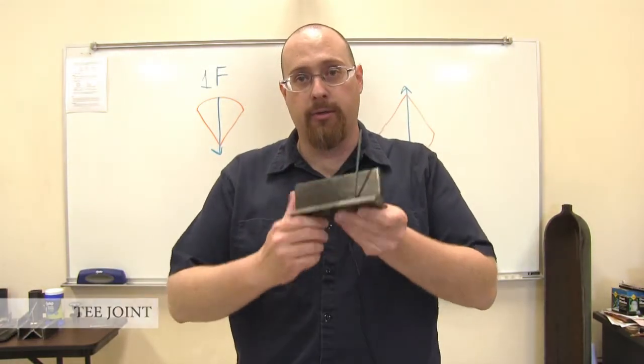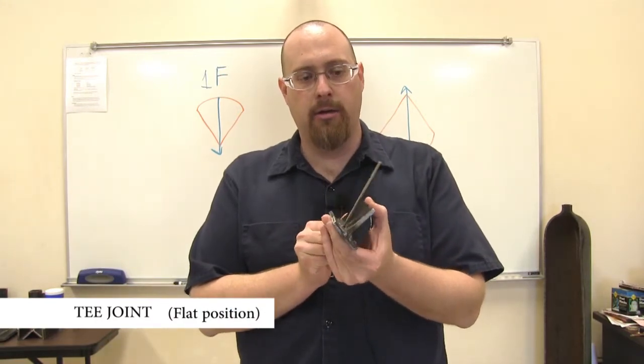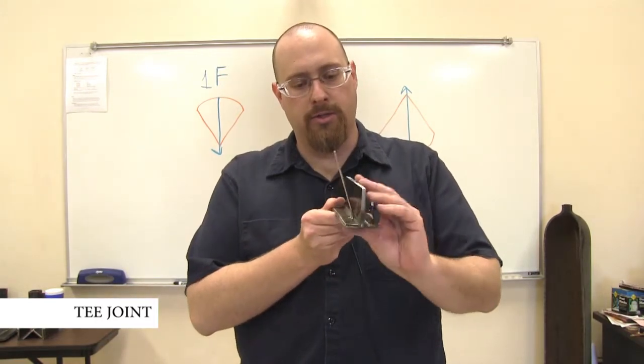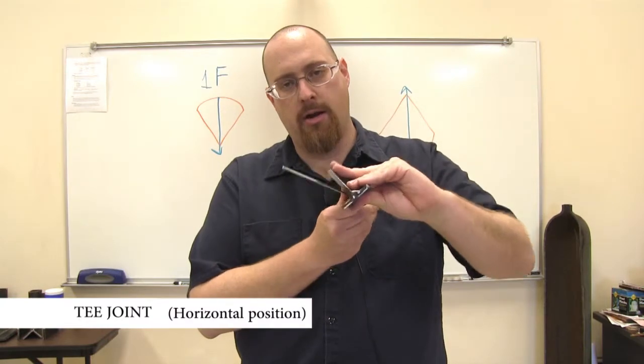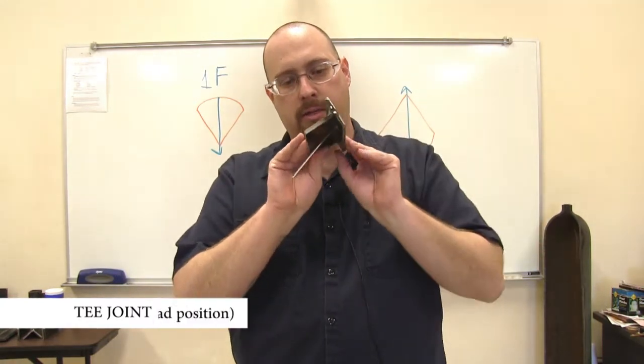Here's our T joint. When we take our T joint, our flat is here, our horizontal is this area, our overhead is like this.